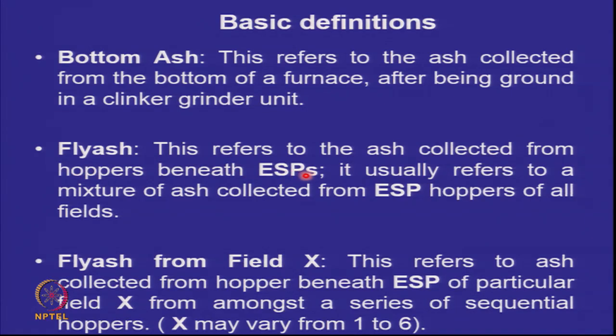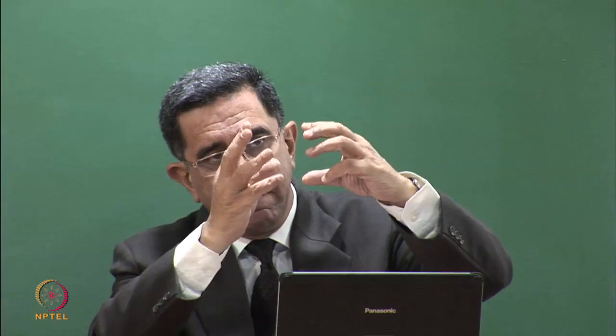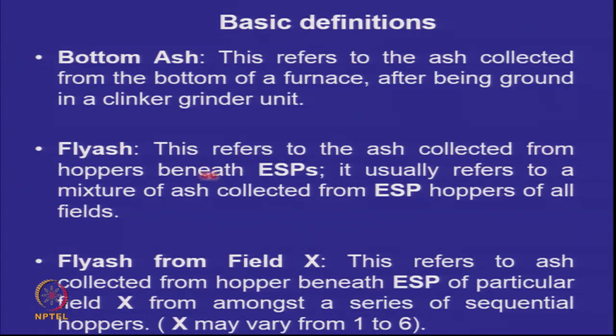Fly ash refers to the ash collected from the hoppers beneath the electrostatic precipitators (ESPs). As flue gases pass through a series of plates — referred to as fields (1 through 6) — particles settle progressively: coarser particles in field 1, finer particles in field 2, and so on, with the finest particles caught in field 6. These finest particles are small in quantity but often very useful for industrial applications such as ceramics.